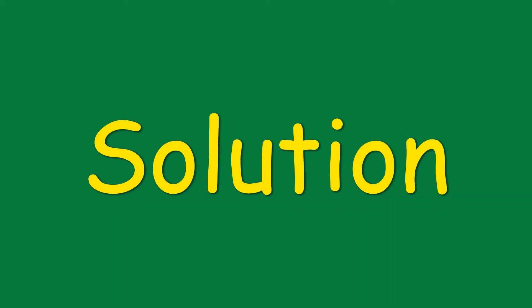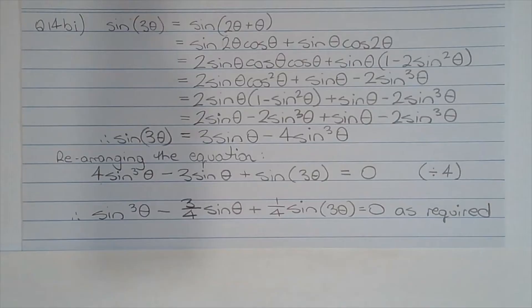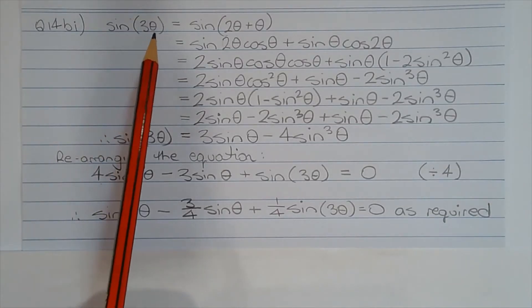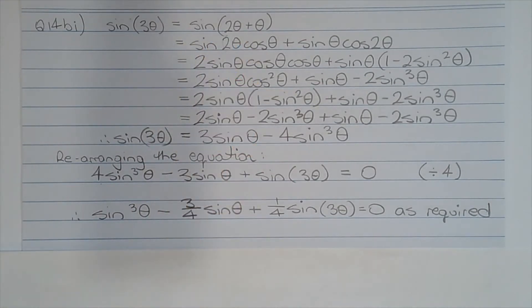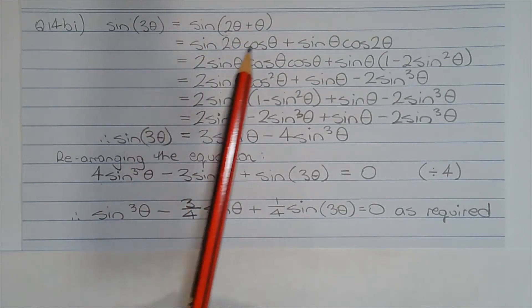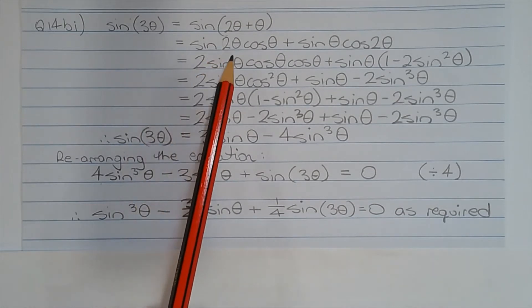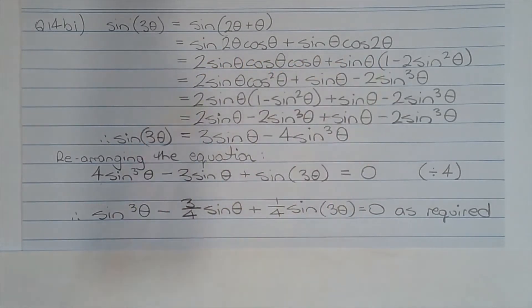Question 14b, Part 1. Show that sin cubed theta minus 3 over 4 sin theta plus sin 3 theta over 4 equals 0. Starting off with sin 3 theta, that can be written as sin 2 theta plus theta. We have the sin of a compound angle, and expanding that, we get sin 2 theta cos theta plus sin theta cos 2 theta.